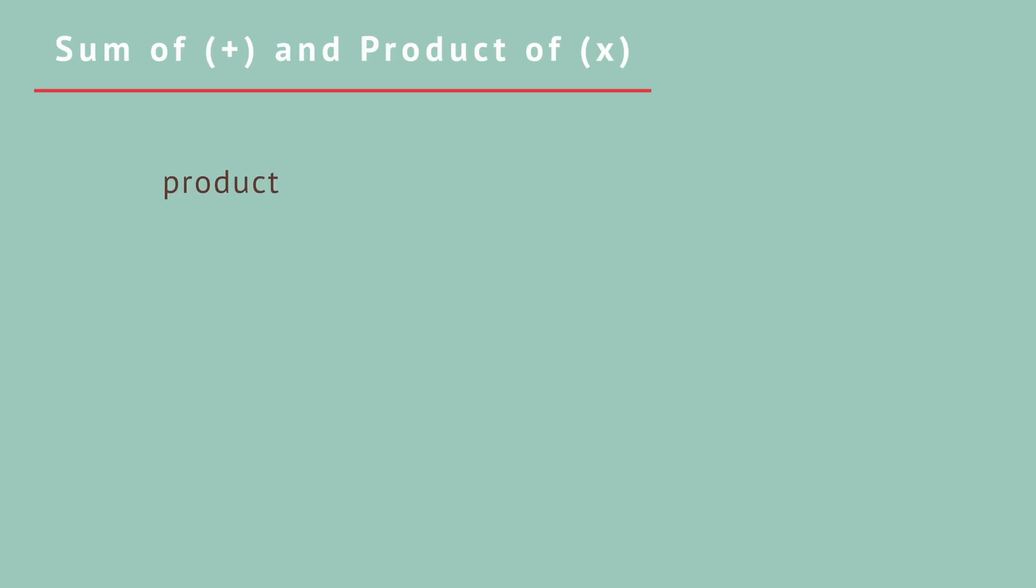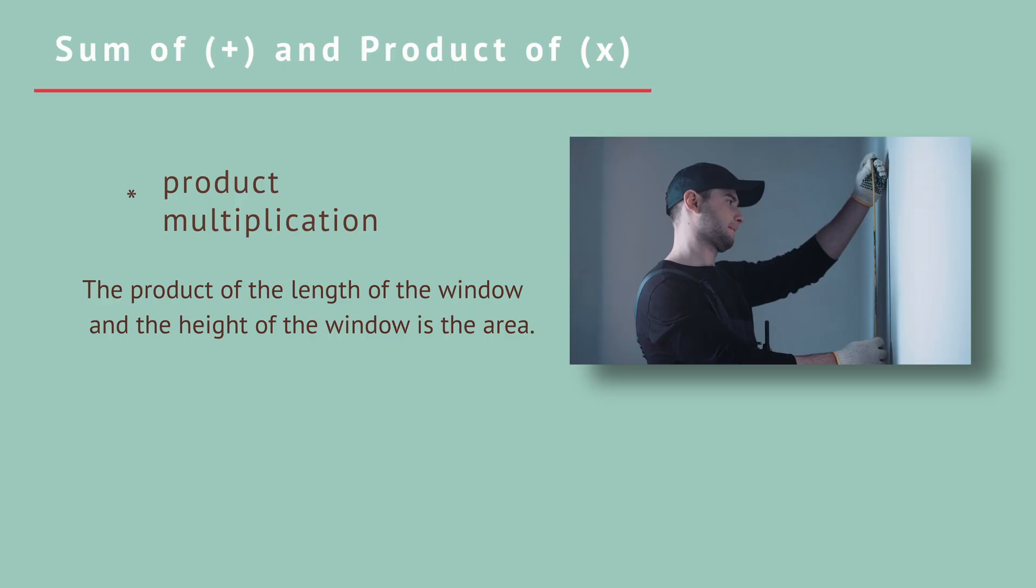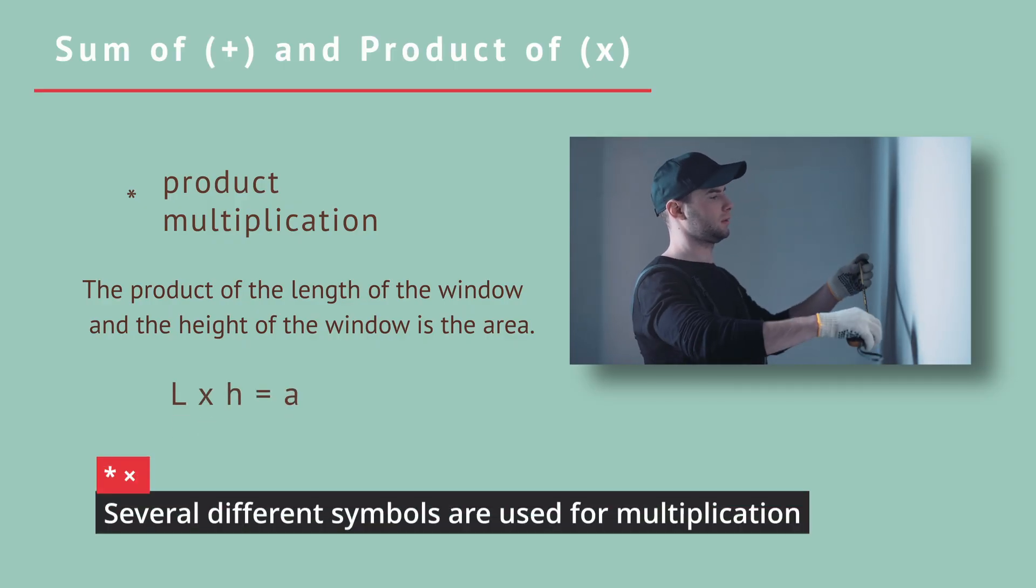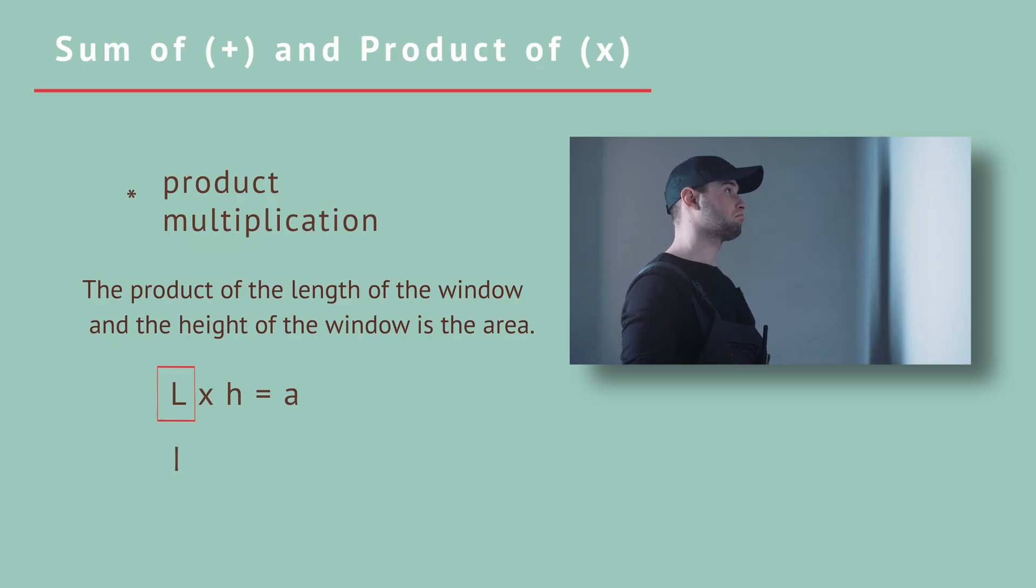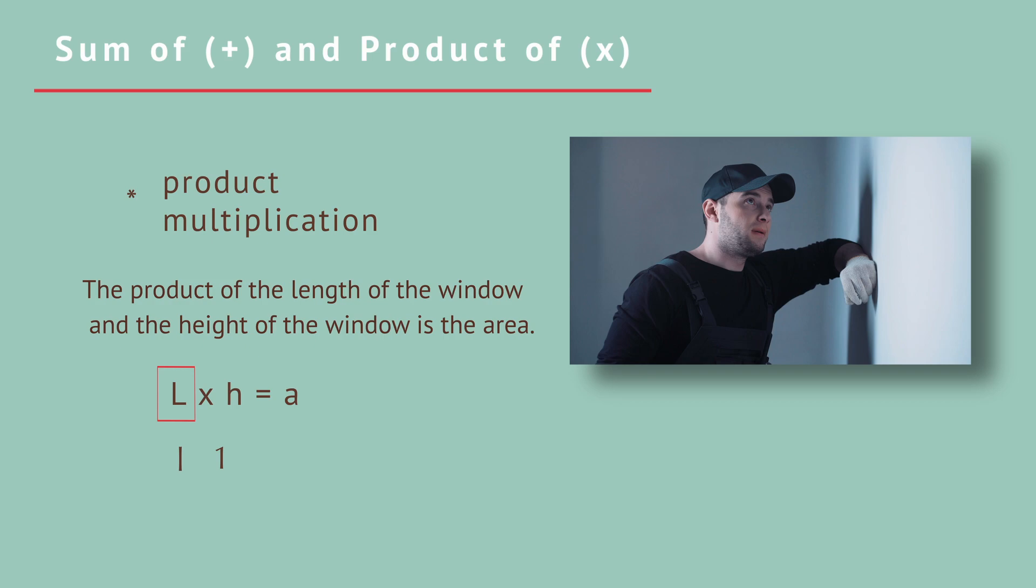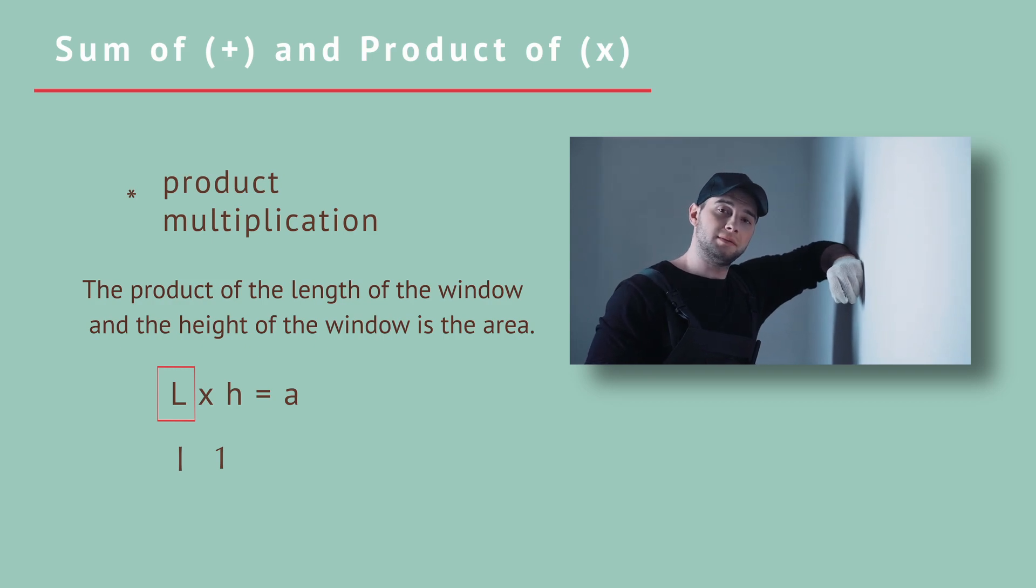The product of two numbers is another way to say you should multiply those two numbers together. We use the multiplication sign to stand for that idea. For example, the product of the length of the window and the height of the window is the area. L times h equals a. Do you know why we wrote a capital L instead of a lowercase l? Because the lowercase l looks like the number one, so it's not a great letter to use for a variable name. You can if you really want to, but why make things harder than they have to be, you know?